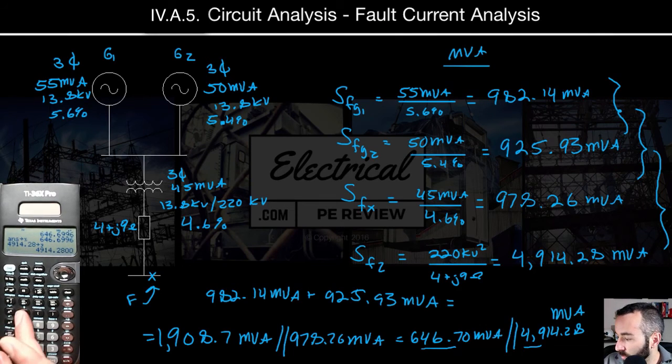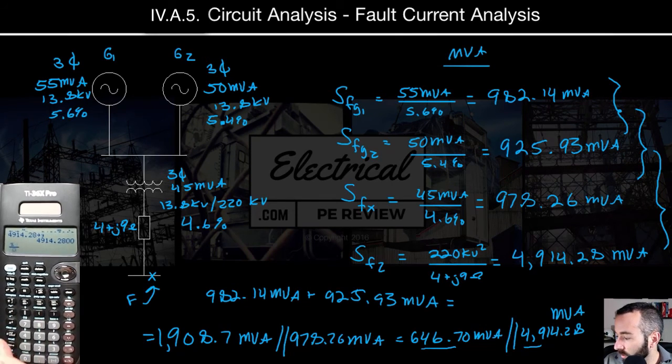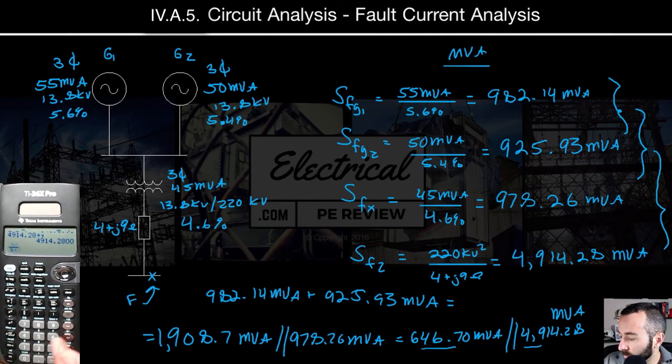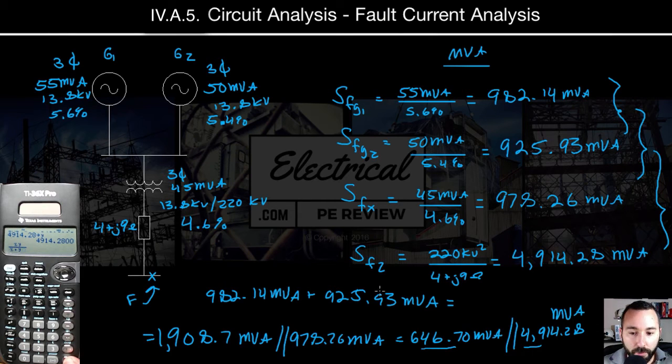And then once again, we have x times y divided by the sum, x plus y. And that's going to give us a total apparent power contribution. I'm going to write it right here just because we're running out of room, but I will make it, we'll wipe the board.